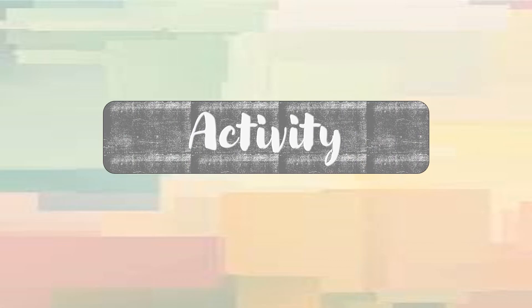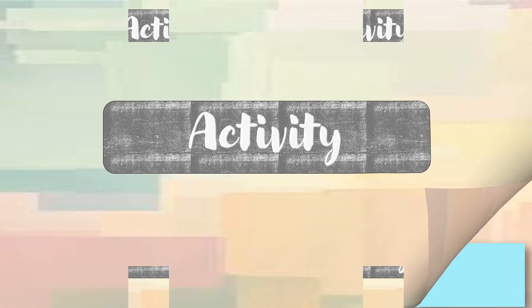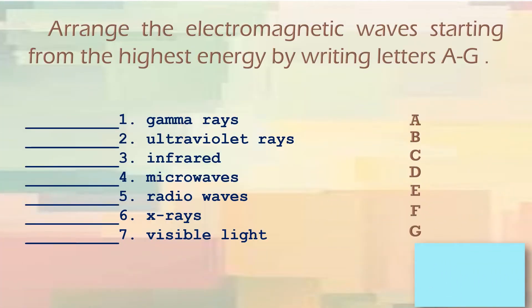Here is the enrichment activity followed by the assessment for you to strengthen the basic concept of electromagnetic waves. The direction goes like this. Arrange the electromagnetic waves starting from the highest energy by writing letters from A to G. Learners, I will give you 10 seconds to do this. Let's start!